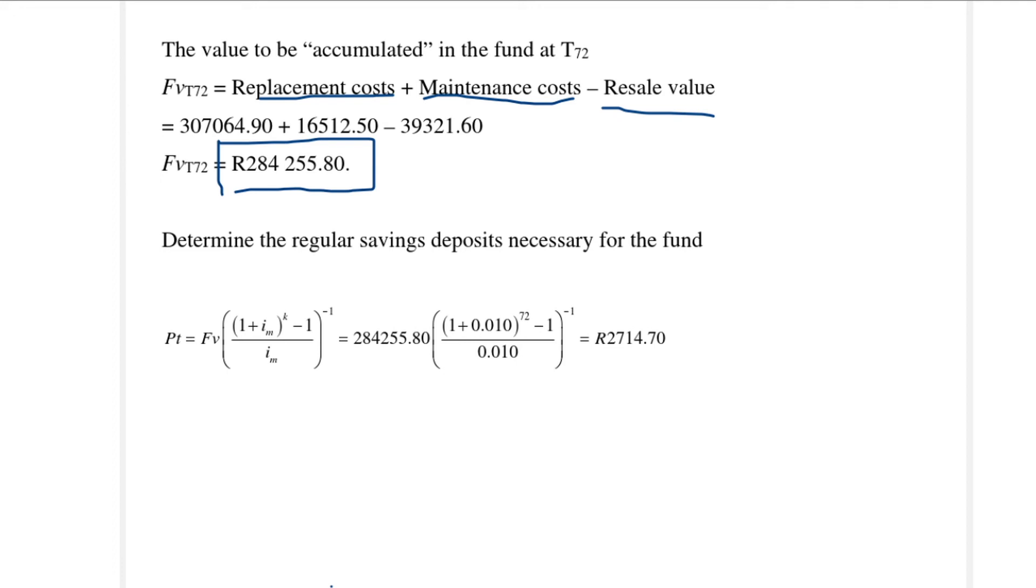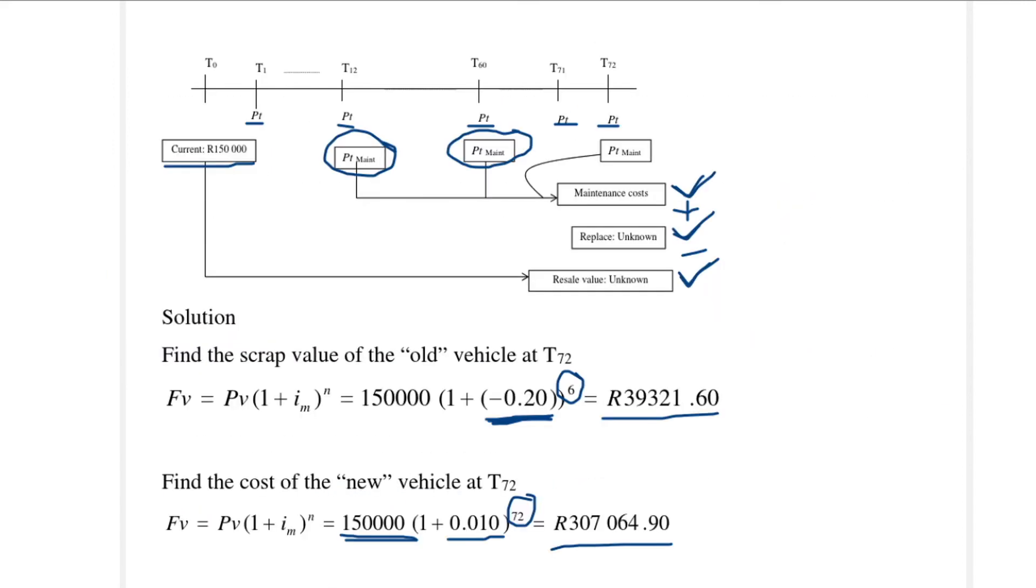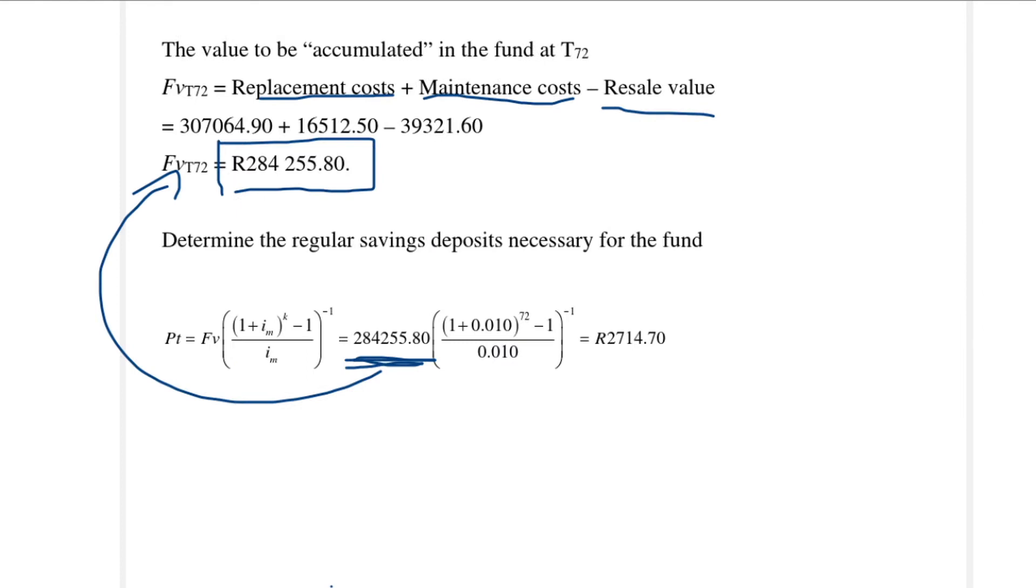Now we use that again in the future value formula for an annuity, but we want to calculate the payments that need to be made on a monthly basis into this fund. So for the future value, we use this value that we've calculated at the top. Our interest rate, remember, was 12% per annum compounded monthly, so that is where the 0.01 comes from. We have 72 months, and if you do the calculations you will see that you need to pay 2,714 rands and 70 cents into the fund on a monthly basis.